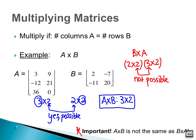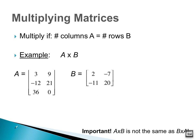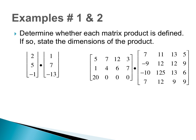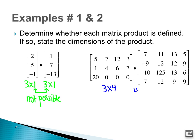The order is very, very important. Let's look at a few more examples. Determine whether the product is defined and then state the dimensions. Always write down the dimensions first. The first matrix is three by one, the second matrix is three by one. These do not match, so this is not possible. Second example: the first matrix is three by four — three rows, four columns. The second one is four by four. These two match, so yes, it is possible. The product will have dimensions three by four.